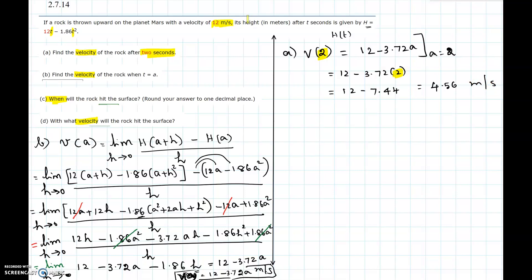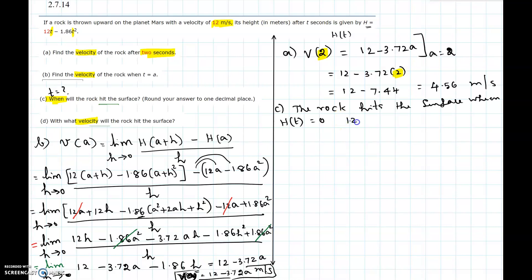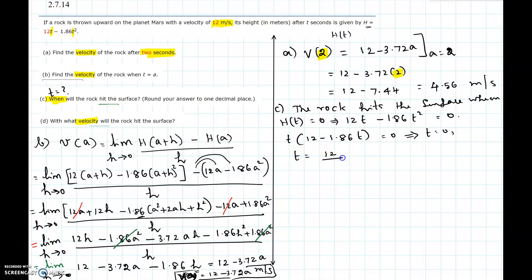Now for part c: when will the rock hit the surface? The rock hits the surface when the height equals zero. So we set 12t - 1.86t² = 0. Factoring out t: t(12 - 1.86t) = 0, giving t = 0 or t = 12/1.86, which rounds to 6.5 seconds.